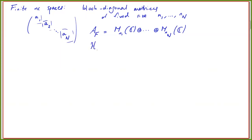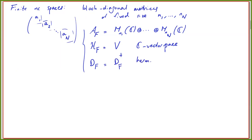This can act on a complex vector space V with an inner product. The space V should decompose into irreducible representations of all these block matrices. Then D_F is nothing but a fixed Hermitian matrix. Even though these objects are rather simple, they will form key examples for spaces that appear in the particle physics applications that can be described with this formalism.